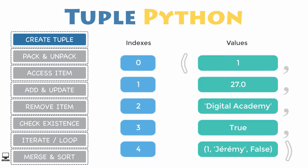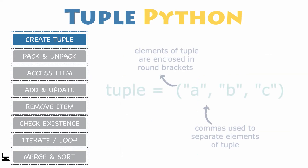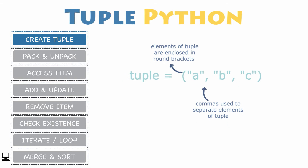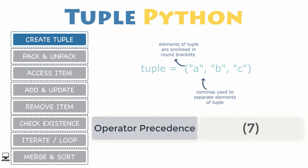The items of a tuple do not have to be the same type. For instance, a tuple can contain integers, strings, floats, or boolean values. Syntactically, a tuple is just a comma-separated list of values. You do not necessarily need the parentheses to create a tuple — it is the trailing commas that really define a tuple — but using parentheses helps make the tuple more visible.